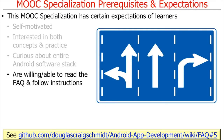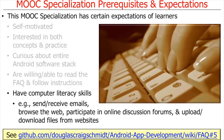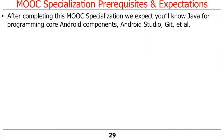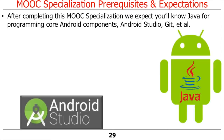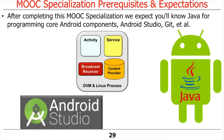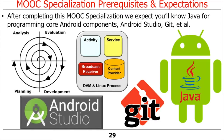We don't expect you to have a computer science background. However, we do expect basic computer literacy skills, such as knowing how to send and receive emails, browse the web, participate in online discussion forums, and upload and download files. After completing this MOOC specialization, we expect you to know how to use Android Studio, apply Java features to develop apps using core Android components, use the Git software version control system, and apply common software engineering concepts to develop mobile apps for Android.